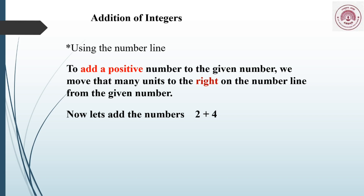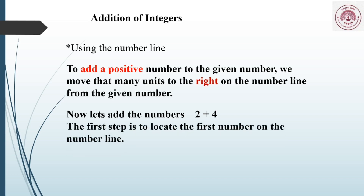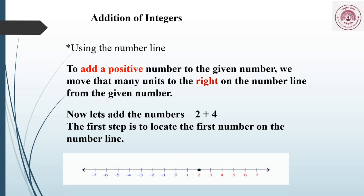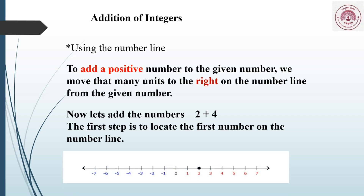Let's add the numbers 2 and 4. The first step is to locate the first number on the number line. We have to locate the number 2 on the number line. Adding 4 means we have to move 4 points to the right, because 4 is a positive number.